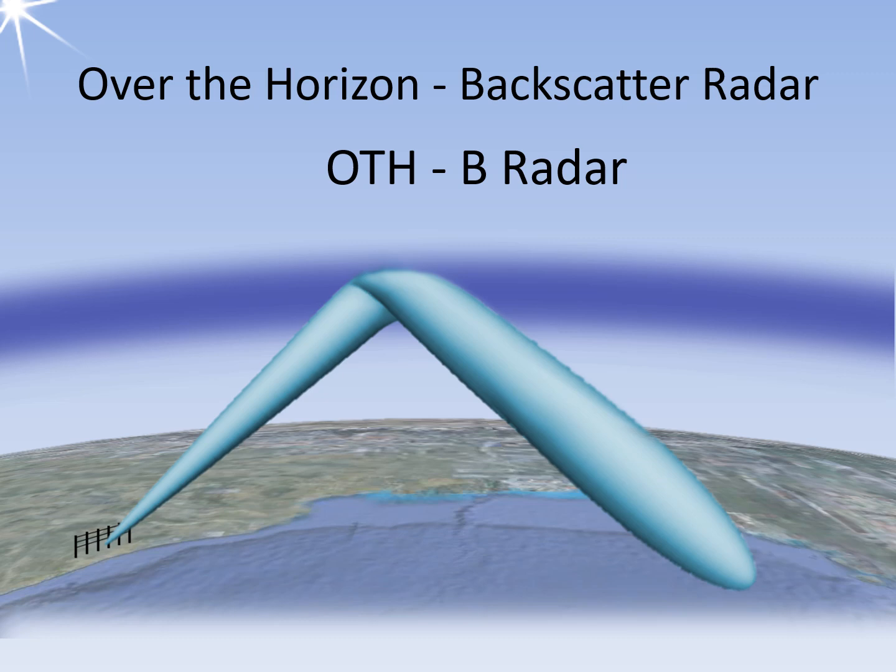Additionally, these systems often include the letter B for backscatter in their designation. In practice, operating the OTH radar is not straightforward. To accurately determine the range of a target by measuring the runtime of the radar's echo signal, it is essential to know the precise height of the reflecting ionospheric layer. Typically, special weather radar equipment is employed for this purpose, specifically designed to measure the height of the ionospheric layers.